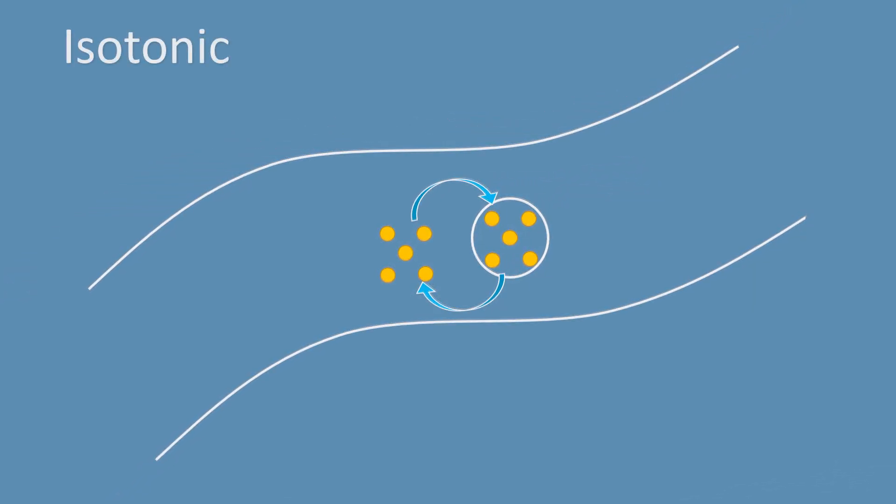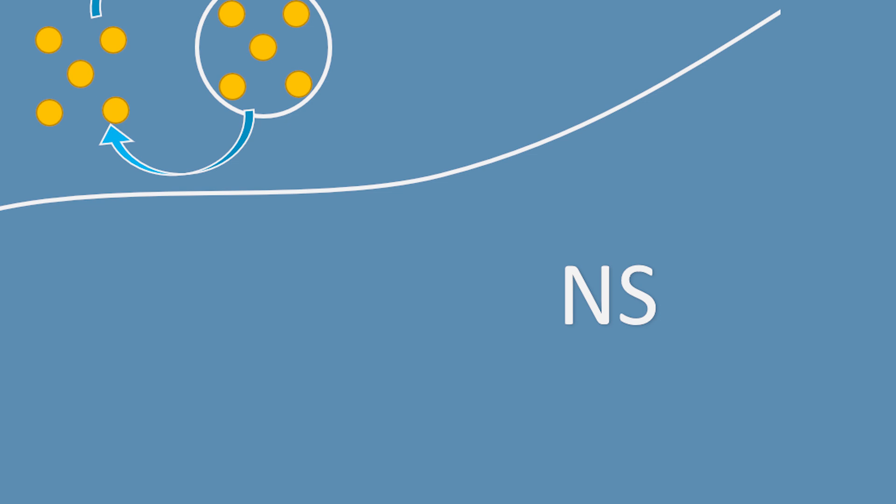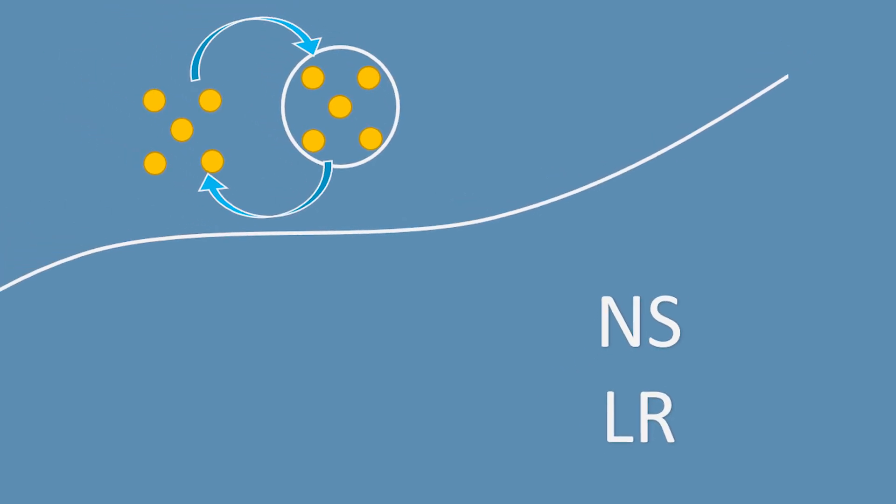When we talk about isotonic solutions, we're talking about a fluid that basically matches the concentration of our blood plasma. So if it matches, nothing is going to have to move anywhere. The big goal of giving isotonic solutions is to put fluid into the bloodstream and have it stay there — sometimes called a volume expander. The two most common examples are NS, normal saline or 0.9% sodium chloride, and LR, lactated Ringer's.